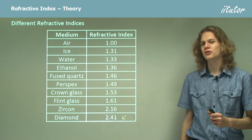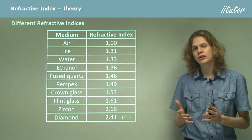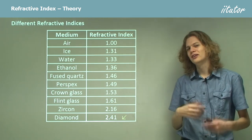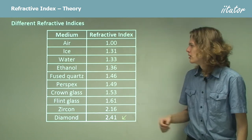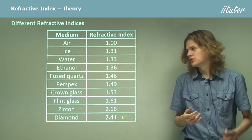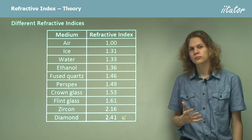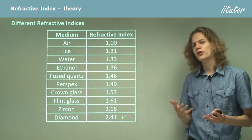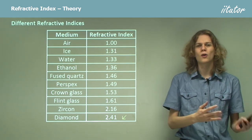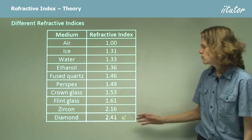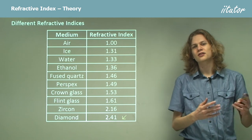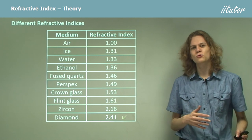Here is a table of refractive indices for different materials. At the top we have air; other gases like pure hydrogen and helium also have refractive indices very close to 1. Moving to liquids: ice, water, and ethanol have refractive indices around 1.3 to nearly 1.4. Ice is less dense than water, which is why it floats. Denser substances like glass, fused quartz, and perspex have refractive indices around 1.5. At the bottom are gemstones, with refractive indices greater than 2, meaning light passes through them less than half as quickly as in a vacuum.